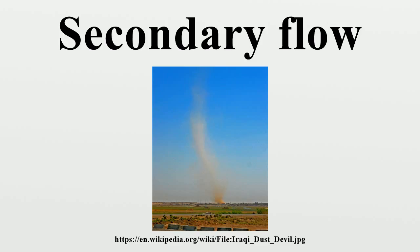As the secondary flow is drawn upward, the air cools and its pressure falls, causing extremely heavy rainfall over several days. Tornadoes and dust devils display localized vortex flow. Their fluid motion is similar to tropical cyclones but on a much smaller scale, so that the Coriolis effect is not significant.